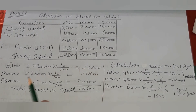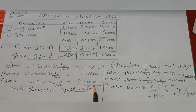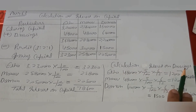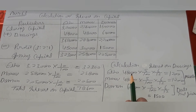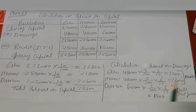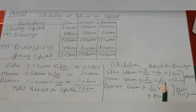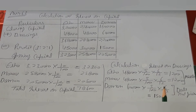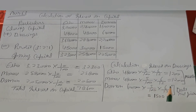Opening capital निकलने के बाद interest on capital: Isha की opening capital 3,23,000 का 10% = 32,300; Manav की 2,58,000 का 10% = 25,800; Daman की 2,05,000 का 10% = 20,500। Total interest on capital = 78,600। Interest on drawings: Isha ने middle of every month में withdraw किया — 48,000 पर 5%, 6 months = 1,200। Manav का भी 48,000 पर 5%, 6 months = 1,200। Daman का 60,000 पर 5%, 6 months = 1,500 (date not given तो 6 months use करते हैं)।